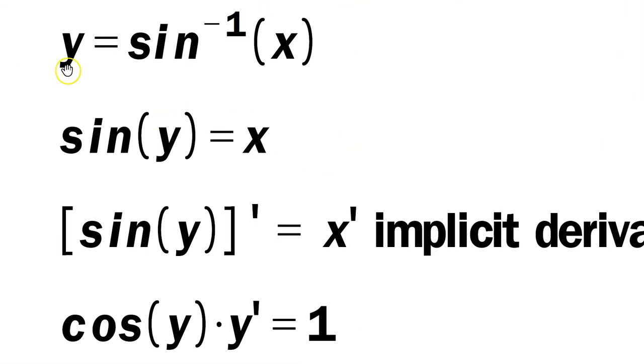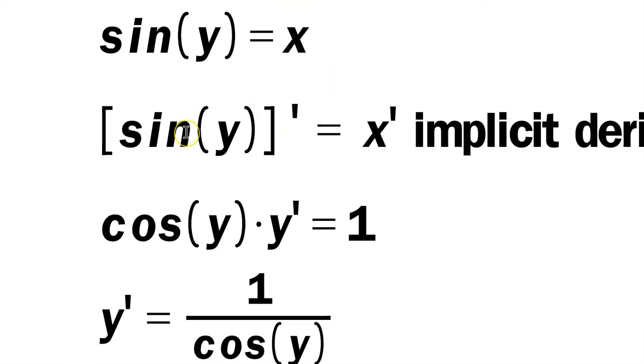So now going back to here, take a look. Since y is equal to sine inverse of x, and we know we can take sine on both sides, so sine of y equals x, from there, we can do implicit derivatives.